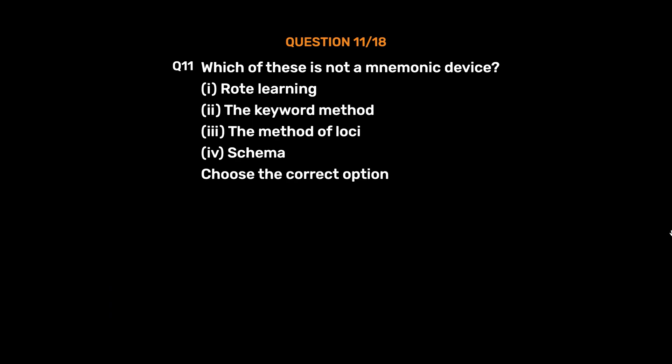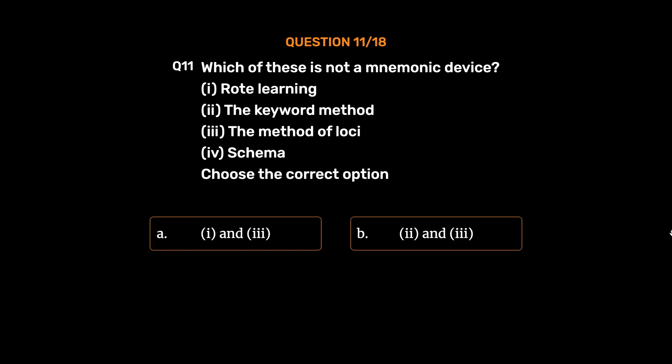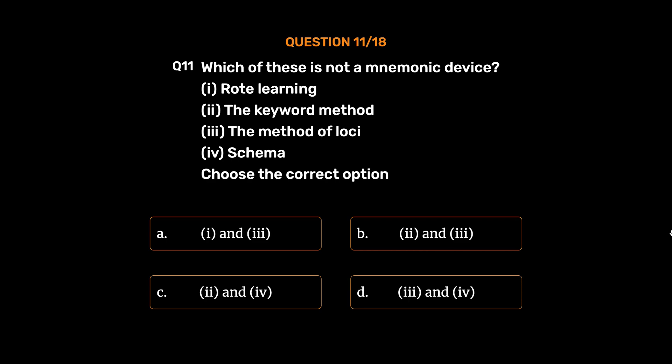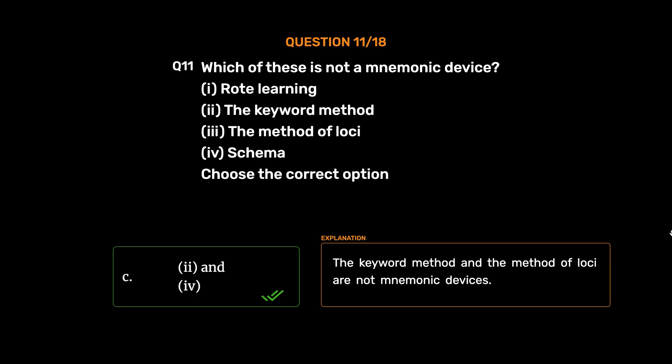Question number 11. Which of these is not a mnemonic device? I: Rote learning. II: The keyword method. III: The method of loci. IV: Schema. Option A: I and 3. Option B: II and 3. Option C: II and 4. Option D: III and 4. The correct answer is Option C, II and 4. The keyword method and schema are not mnemonic devices.